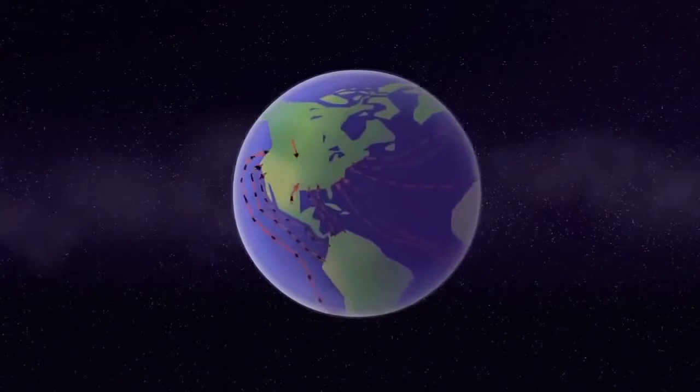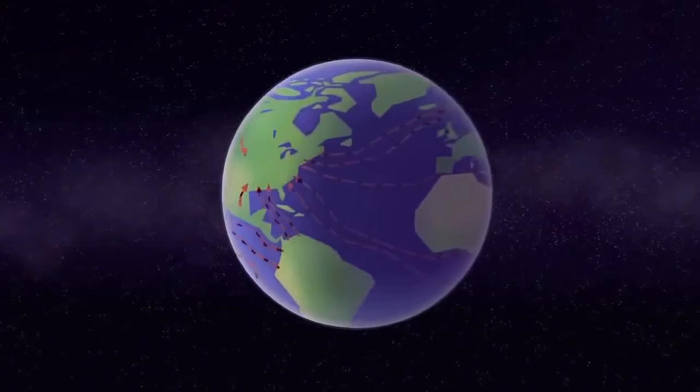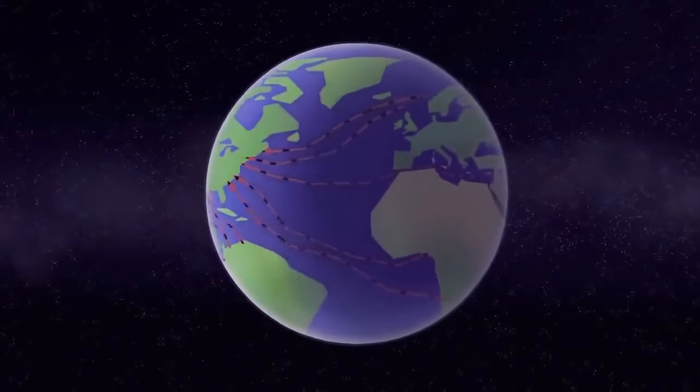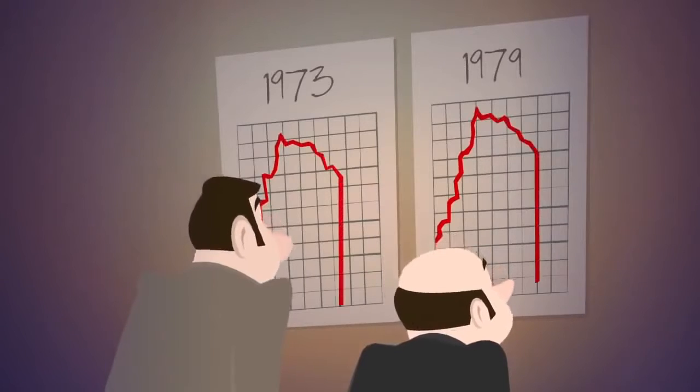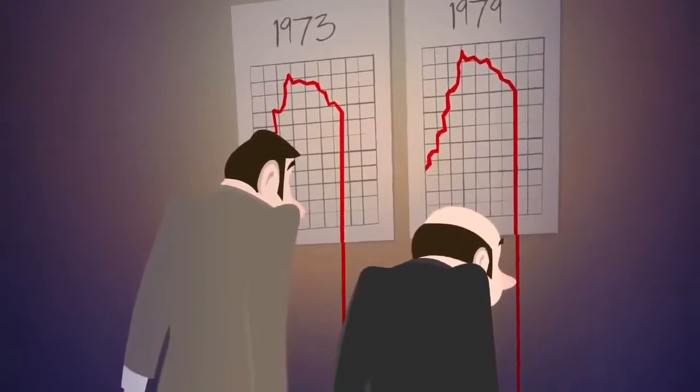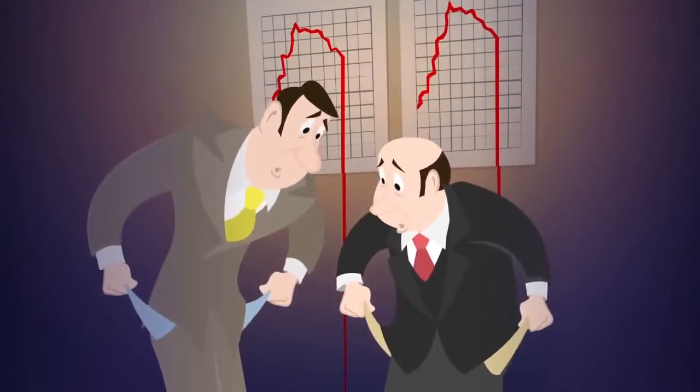From this point on, America would depend increasingly on imported oil. This made her vulnerable to supply disruptions and contributed to the economic mayhem of the 1973 and 1979 oil shocks.